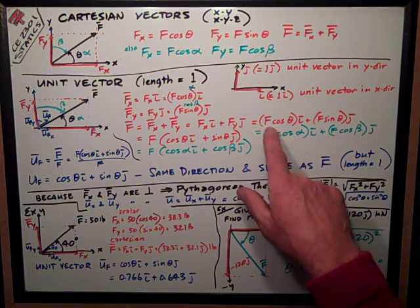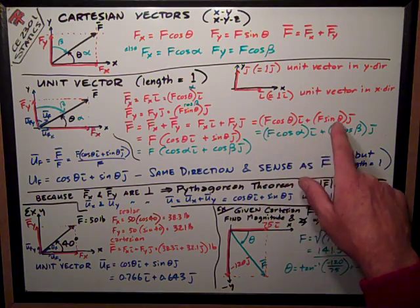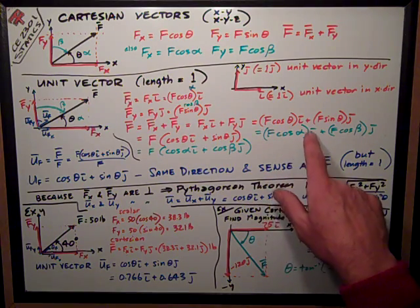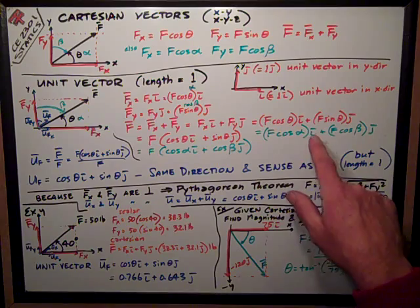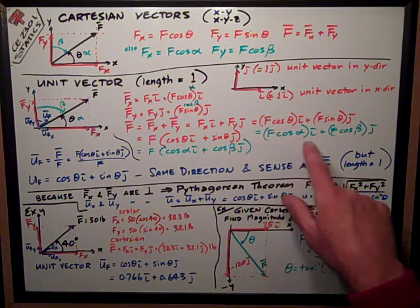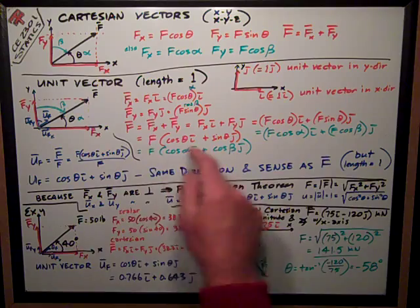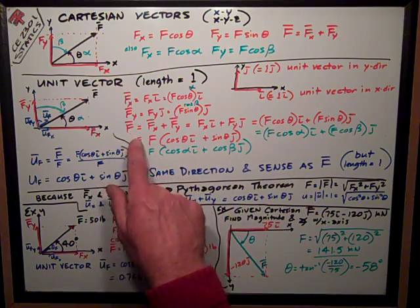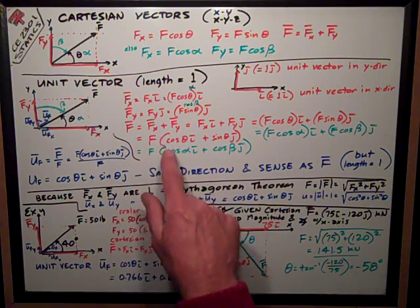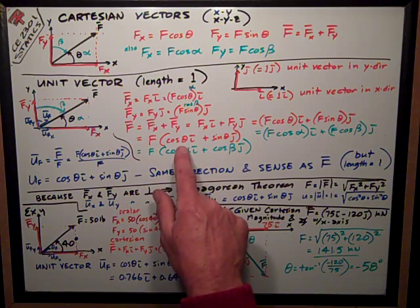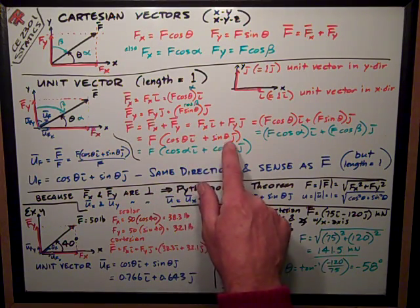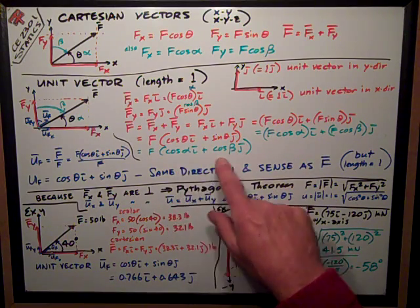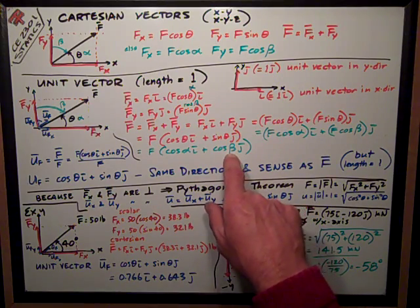Also equal to f cosine theta i plus f sine theta j, and using the position direction angles, alpha and beta, you can express it in this manner. I can also combine the common terms, which is the scalar magnitude of f, the vector f, and multiply it by the parentheses, cosine theta i plus sine theta j, once again doing the substitution for alpha and beta.